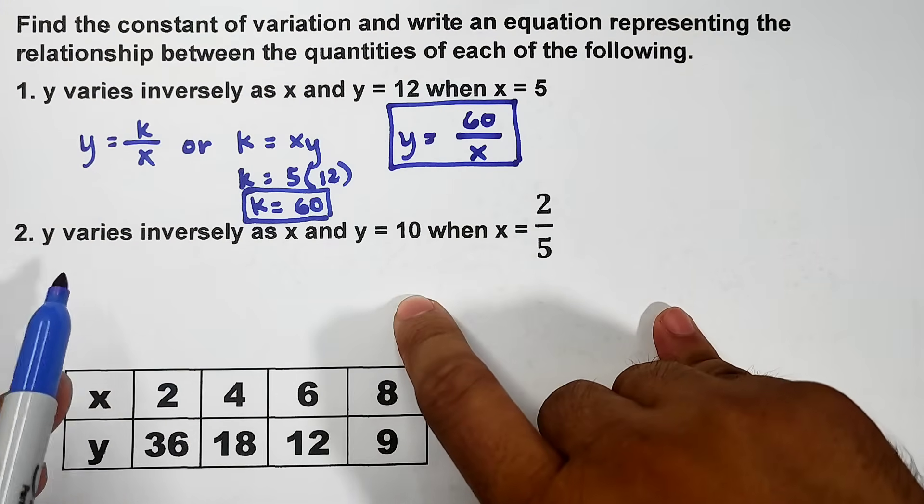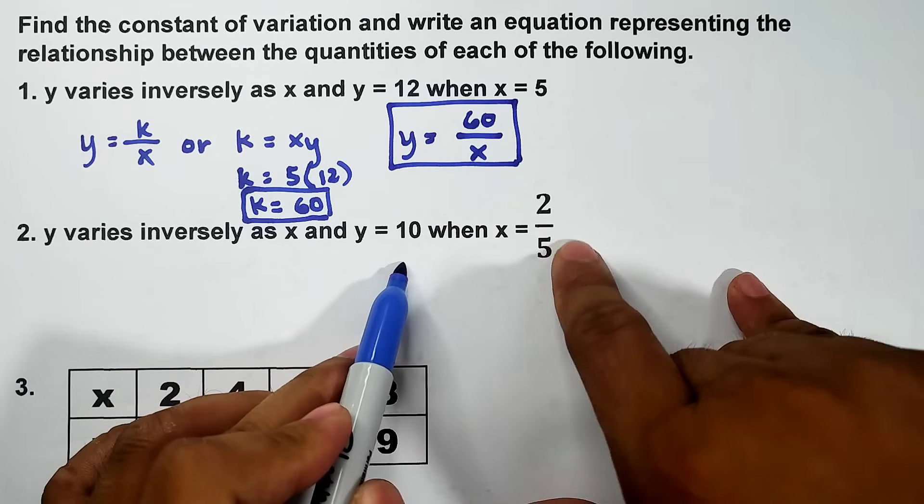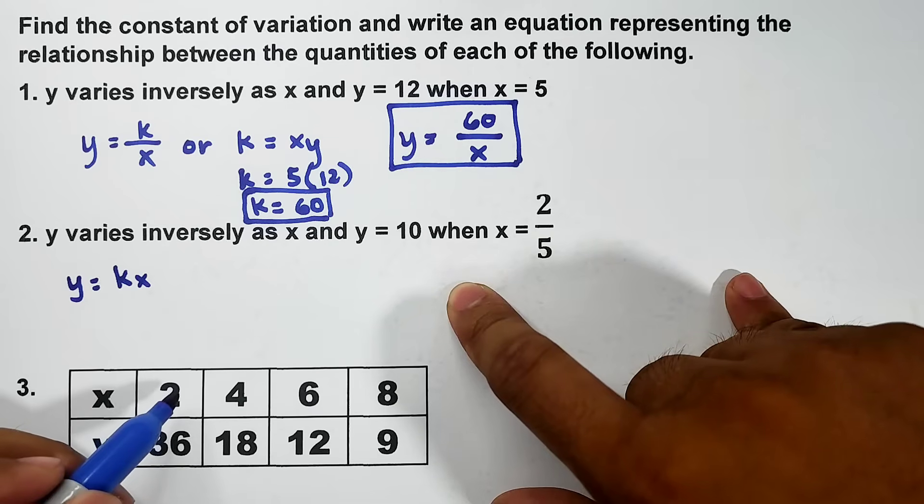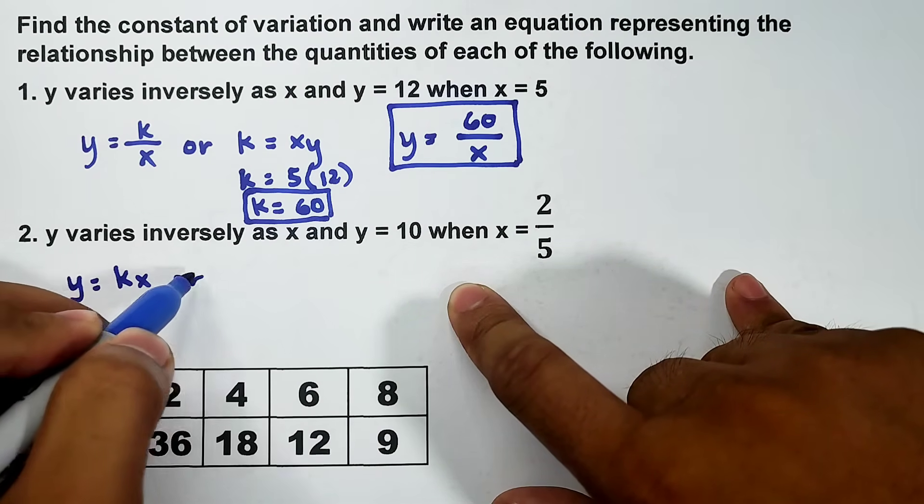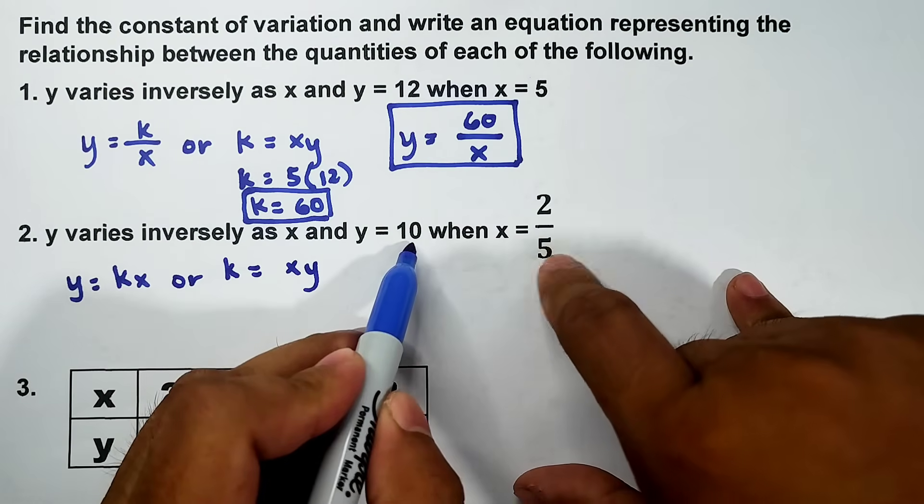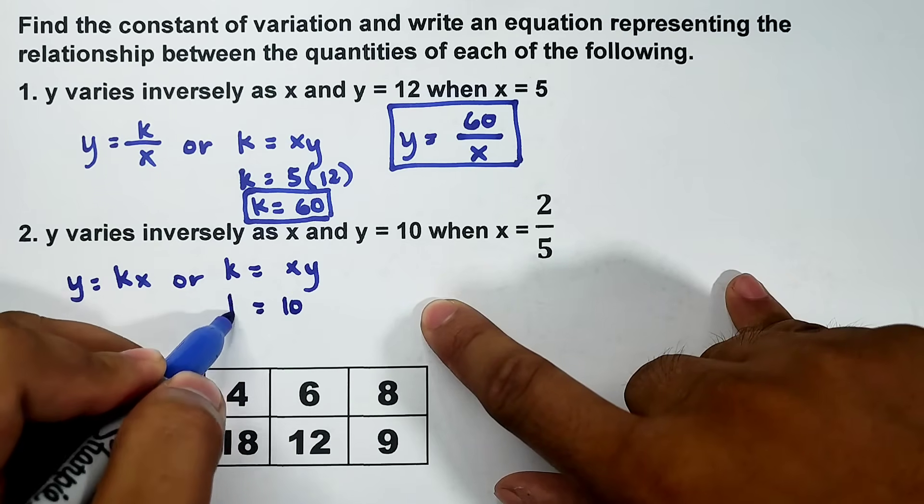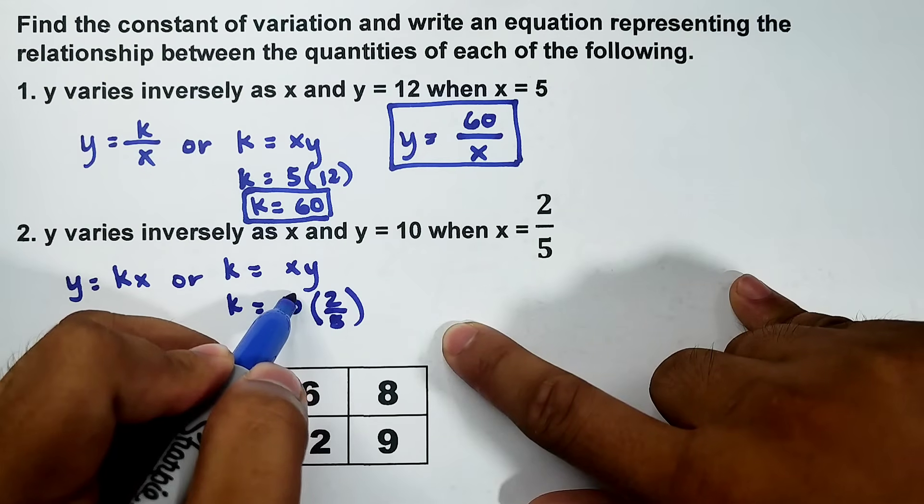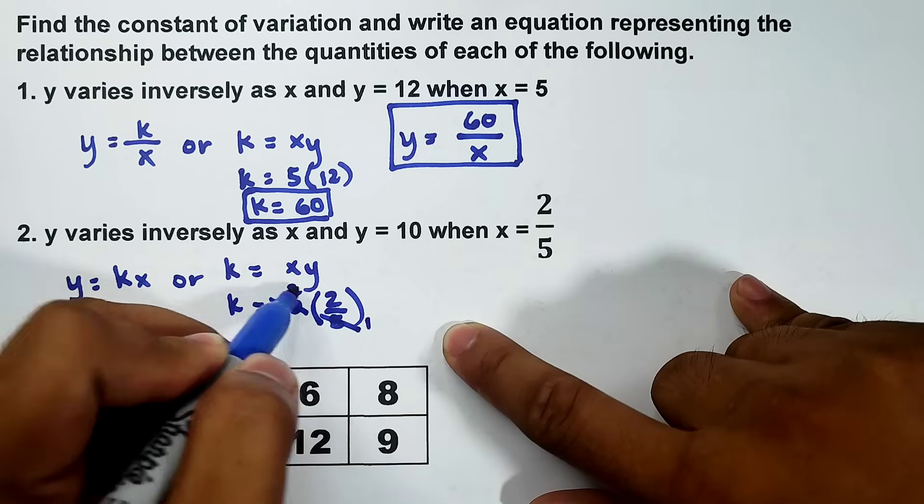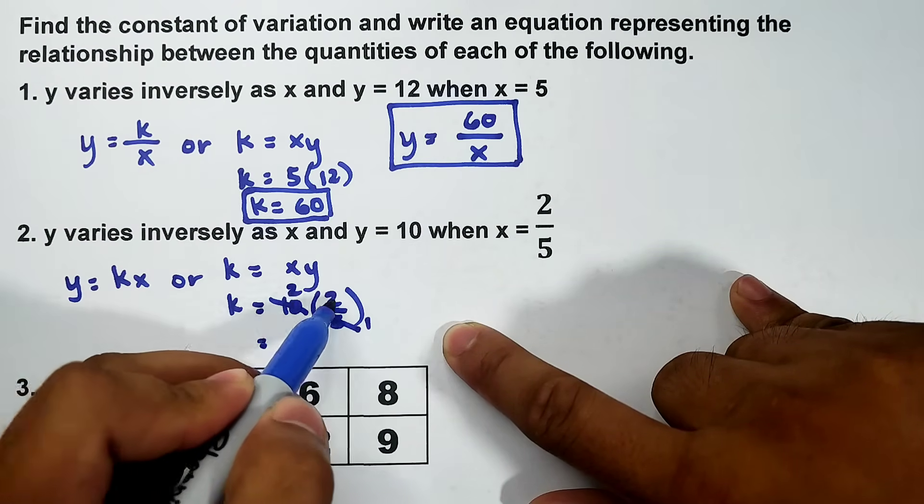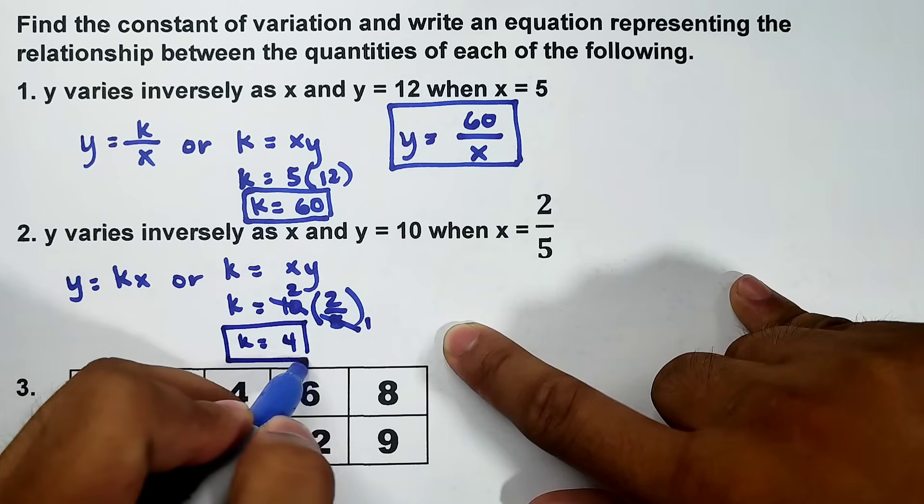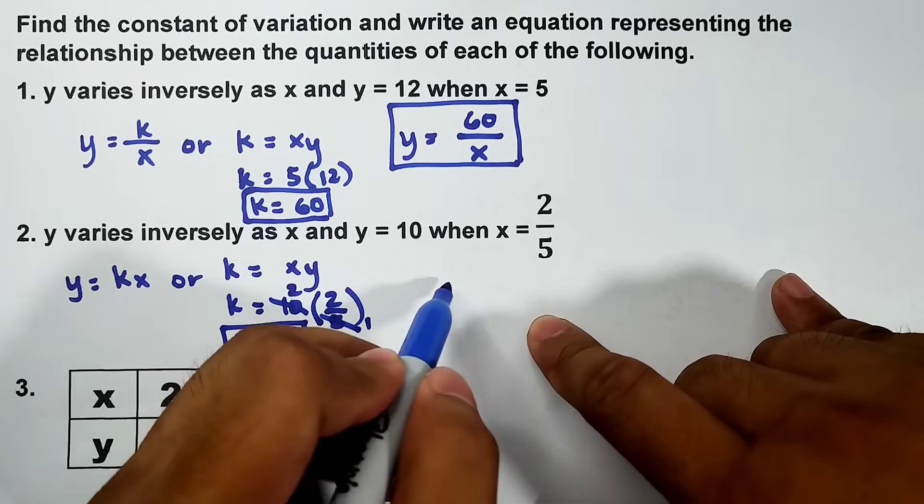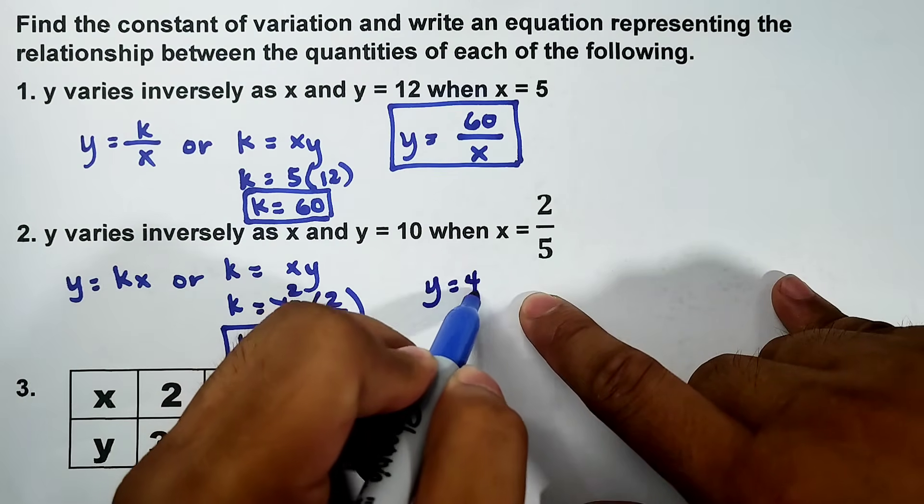Let's continue with number 2. Y varies inversely as x and y equals 10 when x equals 2 over 5. This is a fraction. Convert this first: y equals k over x. For the formula, k equals xy. To find the constant, multiply these two: 10 times 2 over 5. We can cancel out 5 and 10, giving us 2 times 2 which equals 4. So the constant equals 4. To get the equation representing this variation, go back and you have y equals 4 over x.